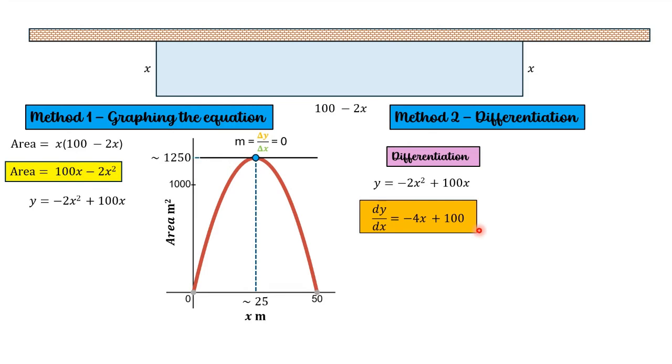As we said earlier, if we know what the gradient is, in this case 0, we can substitute that into the equation and set the gradient function equal to the gradient of 0. Now we can calculate x by adding 4x to both sides, so 4x equals 100. Divide everything by 4, so I know that x is 25.